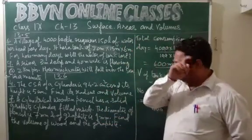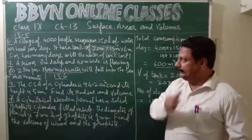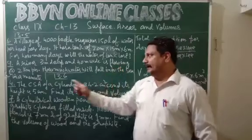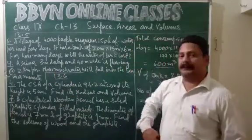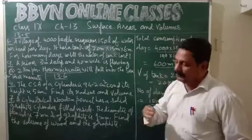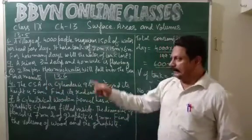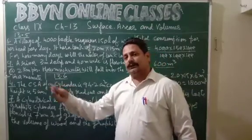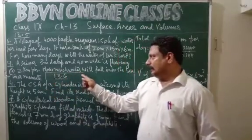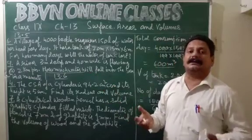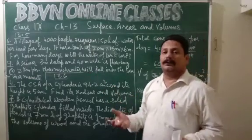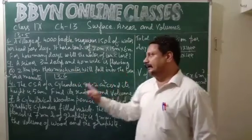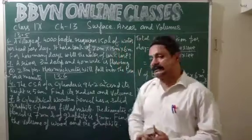Another question: A river 3 meters deep and 40 meters wide is flowing at a rate of 2 kilometers per hour. The water in the river is moving at the speed of 2 kilometers per hour towards the ocean or the sea. How much water will fall into the sea in one minute?